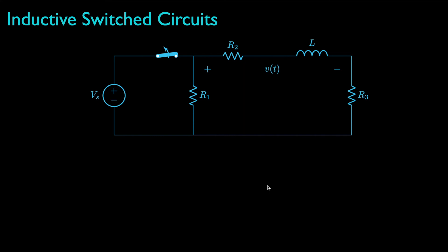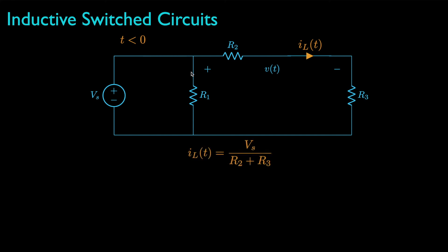Now let's take a look at another circuit that has a voltage source, three resistors, and one inductor. The switch is initially closed and then opened at t equals zero, and we want to determine the voltage drop across the inductor and the resistor with resistance R2. For t less than zero, we view the inductor as a short, and its current can be evaluated as the voltage V sub s divided by the resistances R2 plus R3.